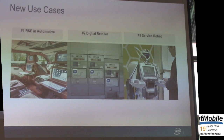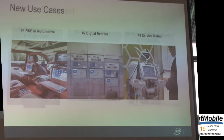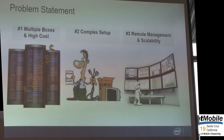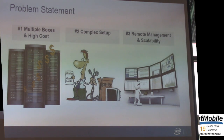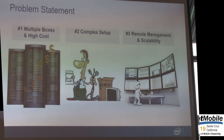ROS is used to control the robot, and Android is used to interact with users through screens. All of these use cases require the systems to serve different users through different Linux-based OSes at the same time without interference.